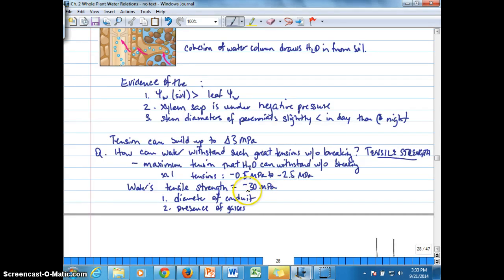So water's tensile strength is basically negative 30 megapascals, so it's below the threshold where the water column might break. But the tensile strength of water in plants is dependent on a couple of factors here, one of which is the diameter of the conduit, such that the smaller the diameter, or radius, of the conduit, the higher the tensile strength.